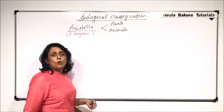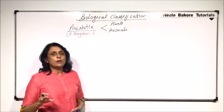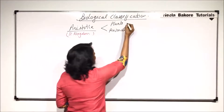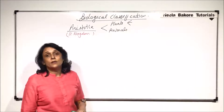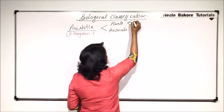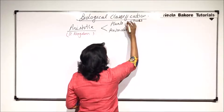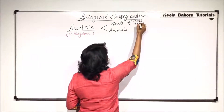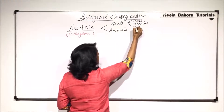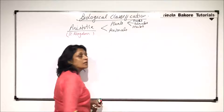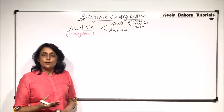In plants, all unicellular and multicellular every type of plant was placed. These plants were further classified on the basis of their sizes. Tall ones were called trees, smaller ones were the shrubs, and the very small delicate plants were called herbs. So this classification was just on the basis of morphological structure.